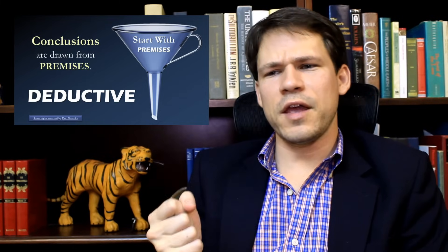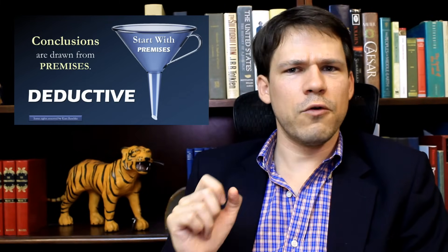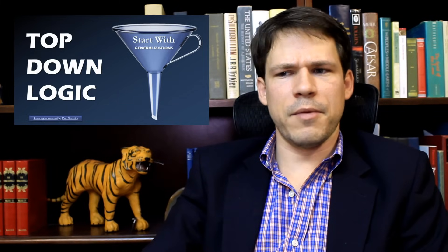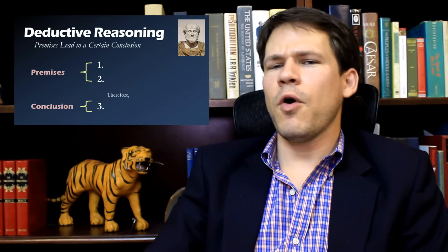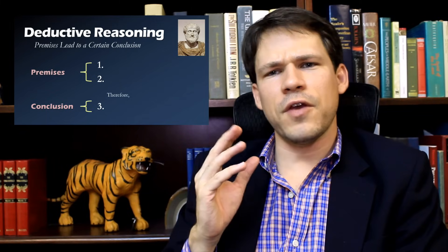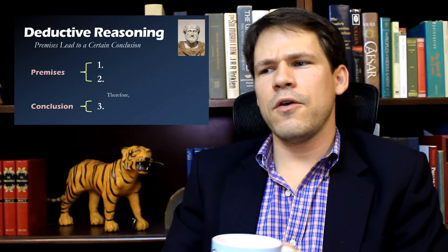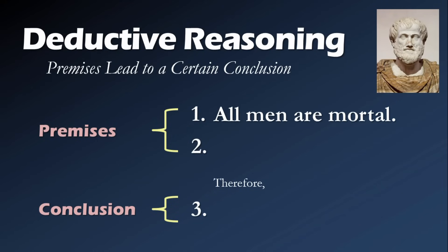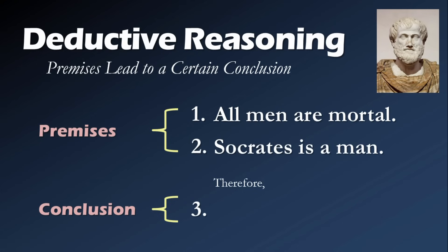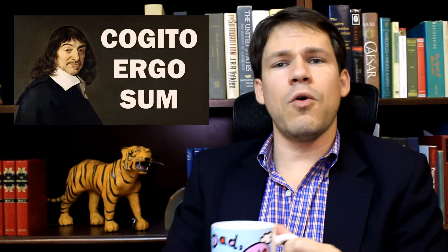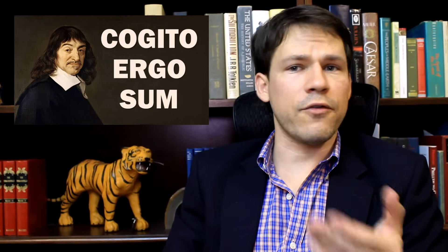With deductive reasoning, conclusions are drawn from premises - top-down logic. The most classic example is when Aristotle says: first, all men are mortal - we start with a general premise. Then we look at a specific situation: Socrates is a man. Therefore, Socrates is mortal. Going from general to specific.